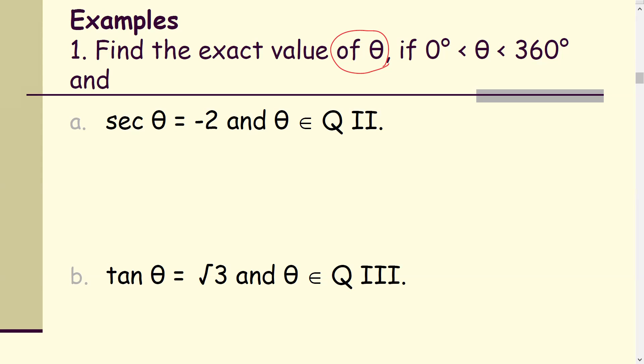Part A: Given secant theta equals negative 2 and angle theta is in quadrant 2. Recall that secant theta is 1 over cosine theta. That means cosine theta equals negative 1 over 2. Our goal is to find angle theta.